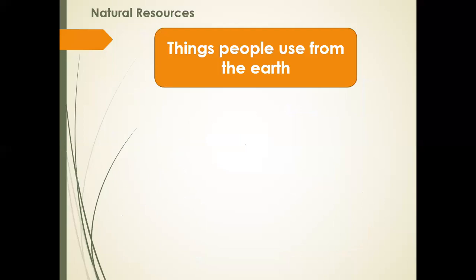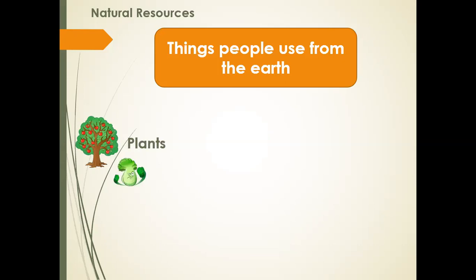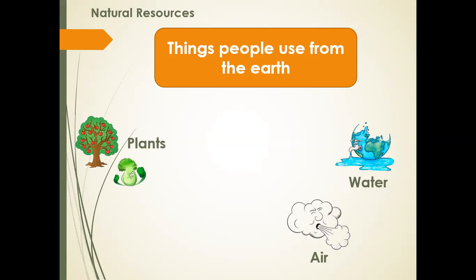So what are the things that people use from the earth? They are like plants — fruits and vegetables. Plants are a natural resource found on the surface of the earth. Then the second thing is water. We use water for cooking, drinking, washing our faces, and taking baths. Water is a natural resource found on the surface of the earth. Then there is air — all of us breathe air, even plants and animals. Air is a natural resource found on the surface of the earth.